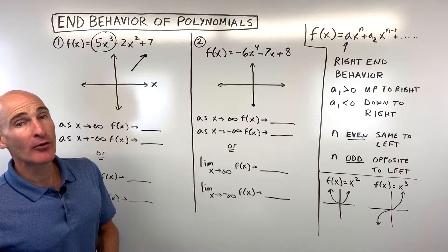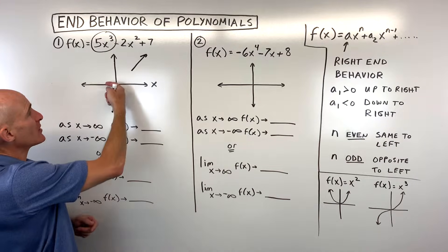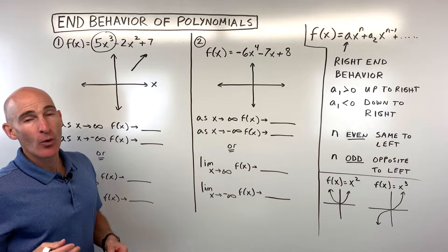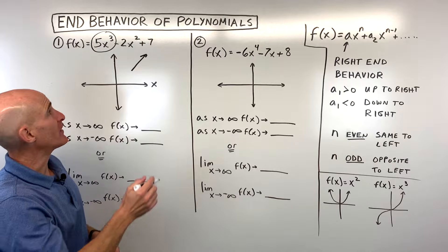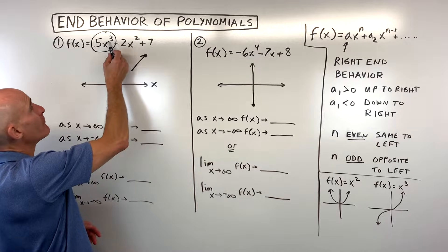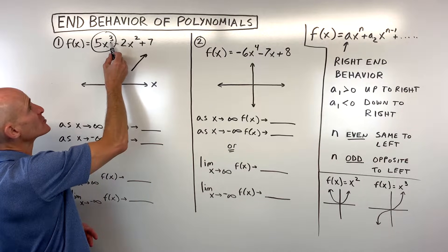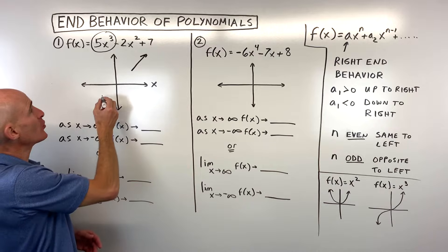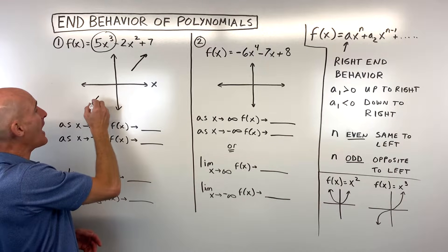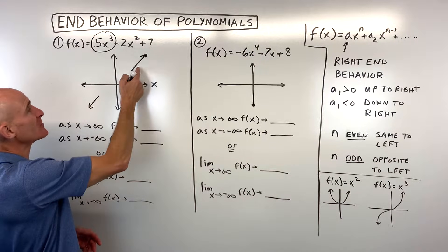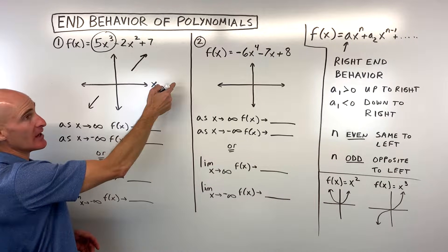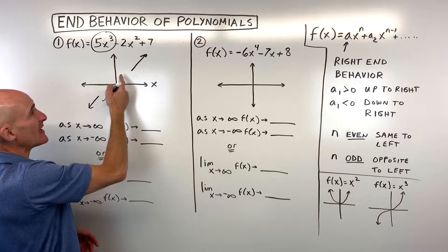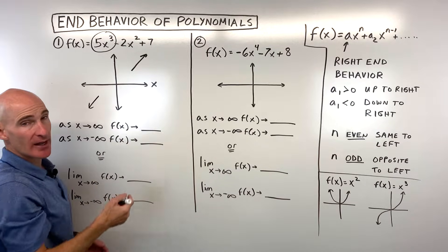Now, what about the left-end behavior — going to the left end of the graph? Here we look at the exponent, the highest power. If the degree is odd, the graph goes the opposite direction from the right-end behavior. If it's even, it goes the same direction as the right-end behavior.